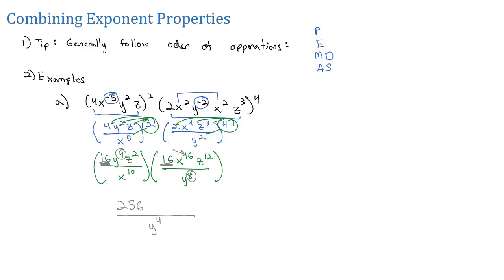For the x's, I see x to the 16th over x to the 10th. Subtracting those exponents gives me x to the 6th positive, so it goes on top. And finally, the z's — I've got z squared and z to the 10th, both on top. Going across, we add those exponents to get z to the 14th. That gives us our simplified expression: 256x to the 6th, z to the 14th over y to the 4th.